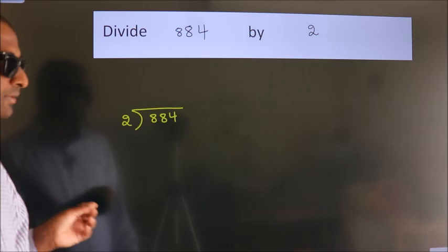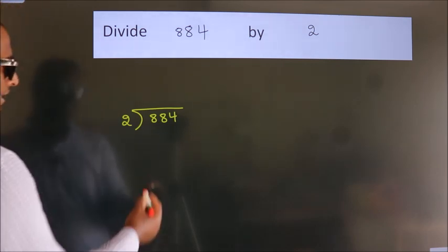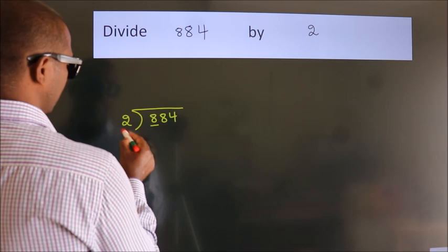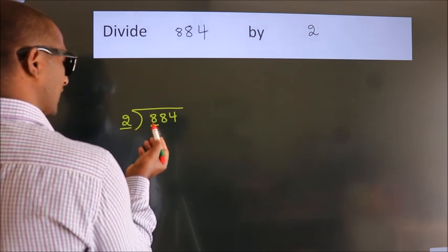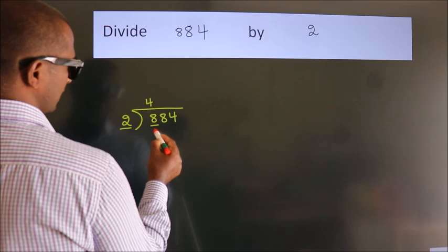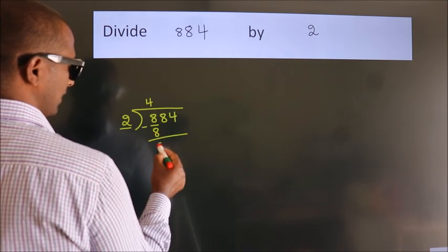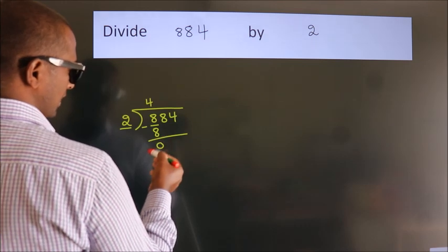This is your step 1. Next, here we have 8, here 2. When do we get 8? In 2 table, 2 fours, 8. Now, we should subtract. We get 0.